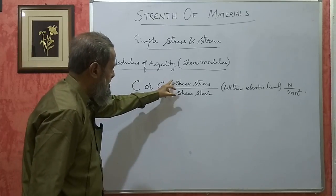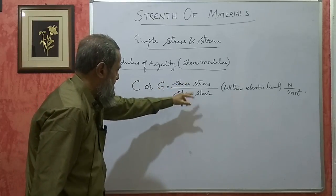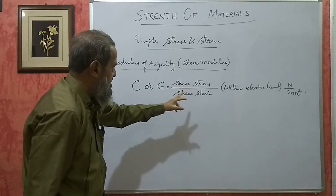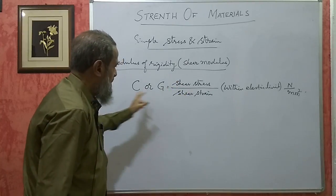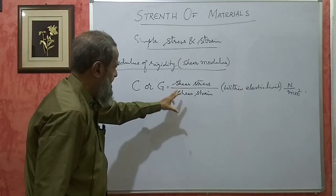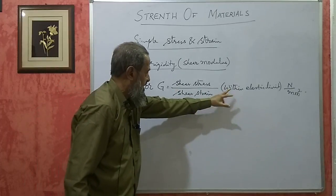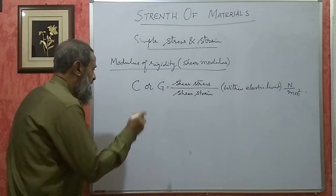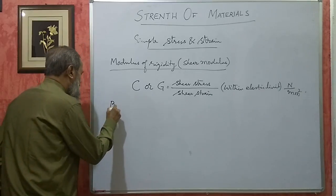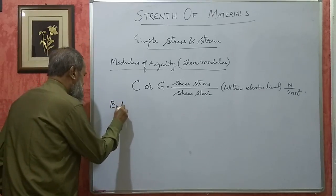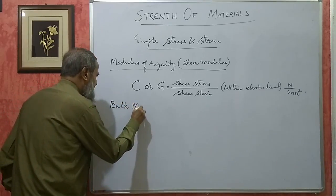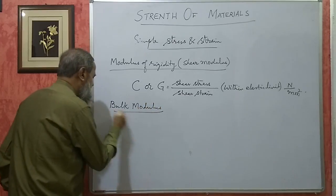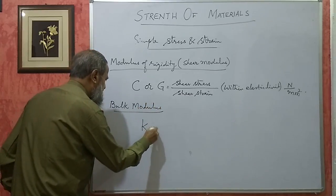Modulus of elasticity is just stress by strain — direct stress by strain. Here it is shear stress by shear strain. This definition they will ask, and it is important that it is within elastic limit. The next one is the bulk modulus. Its symbol is generally K.